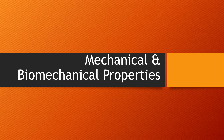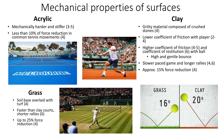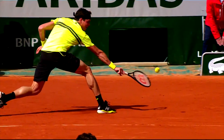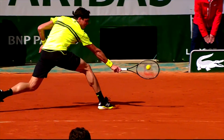First, we'll be discussing the mechanical and biomechanical properties of each surface. Court surfaces differ in mechanical properties. Due to its gritty surface, clay courts have lower coefficients of friction with the player compared to acrylic surfaces, allowing players to slide greater distances.